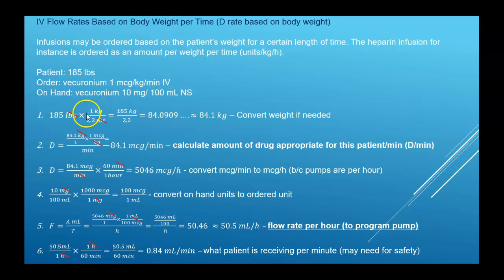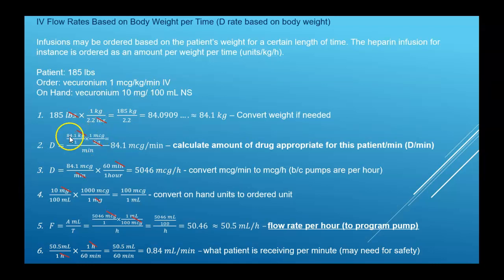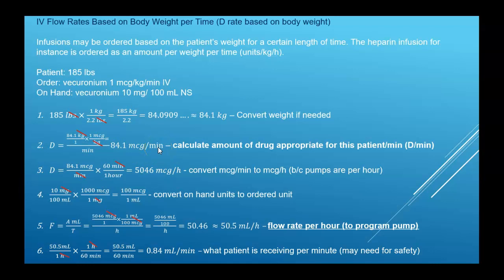First, convert pounds to kilograms. Then find the D rate: take micrograms per kilogram and multiply by kilograms — that gives 84.1 micrograms per minute. Now convert to per hour by multiplying by 60 minutes per hour, giving micrograms per hour.